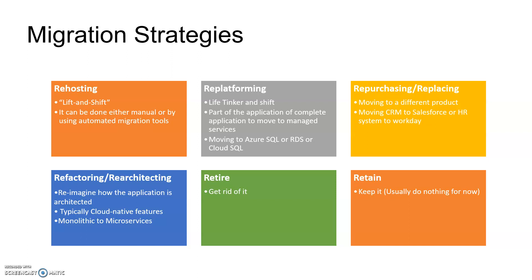The fourth strategy is refactoring or re-architecting. This means reimagining how the application is architected, typically to use the complete power of the cloud and cloud-native features. For example, you have a monolithic application already written, but you want to move it to a microservices architecture. Part of the code can be reused, but you have to completely re-architect and split the complete code into microservices.